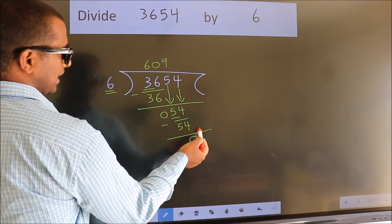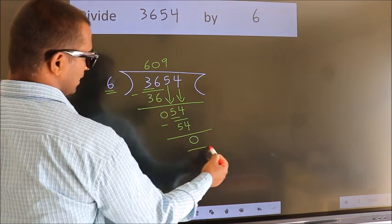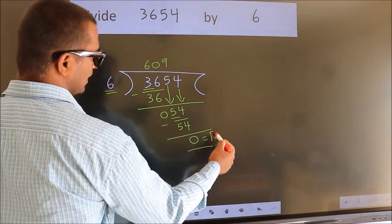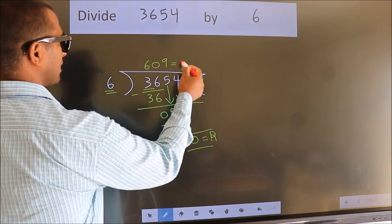No more numbers to bring it down, so we stop here. This is our remainder. This is our quotient.